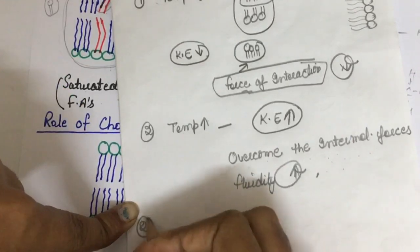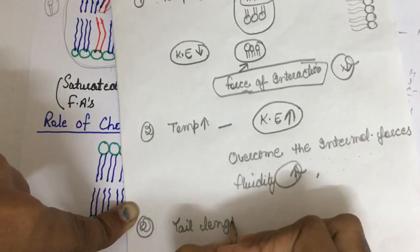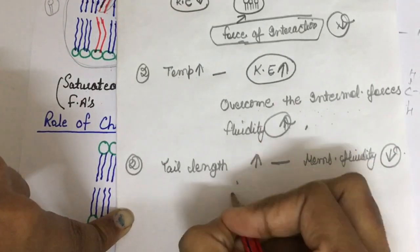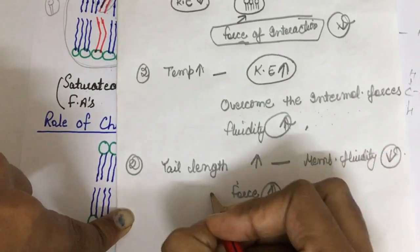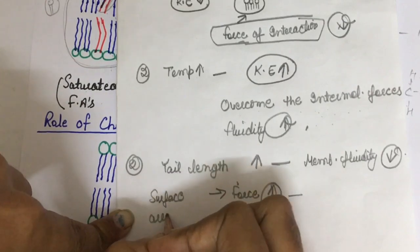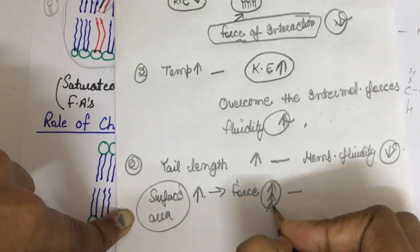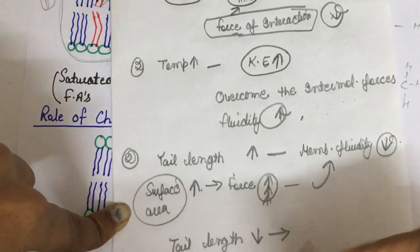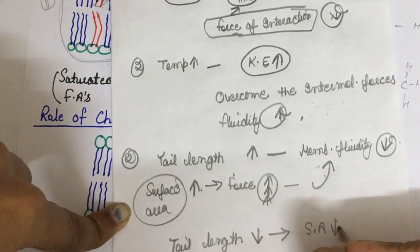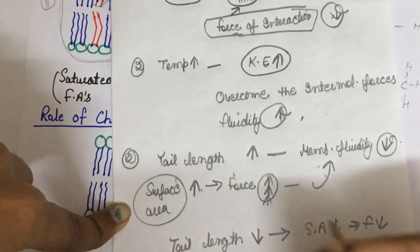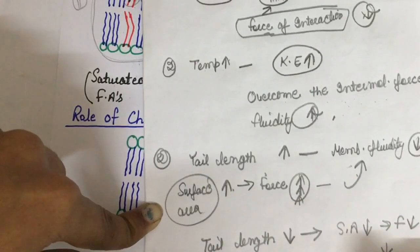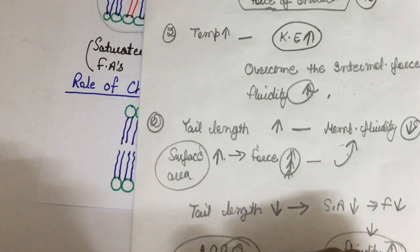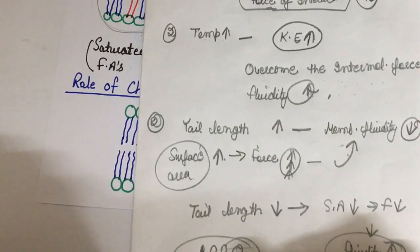The second factor is tail length. If the tail length is longer, membrane fluidity decreases because the force of interaction is more due to greater surface area. If the tail length is shorter, the opposite occurs — surface area is less, force of interaction is less, and fluidity increases. Simply put, fluidity means molecules are separated and free to move; if compact, the membrane is rigid and viscous.